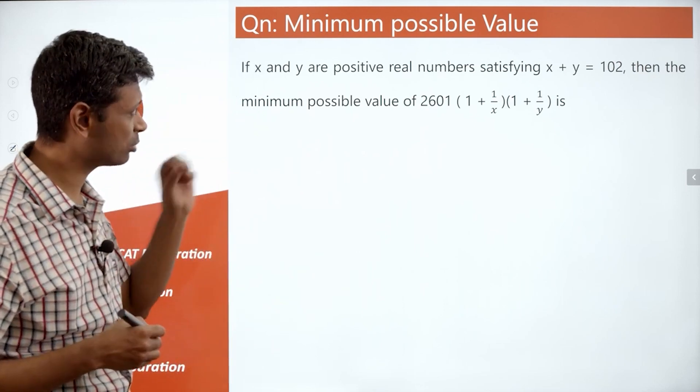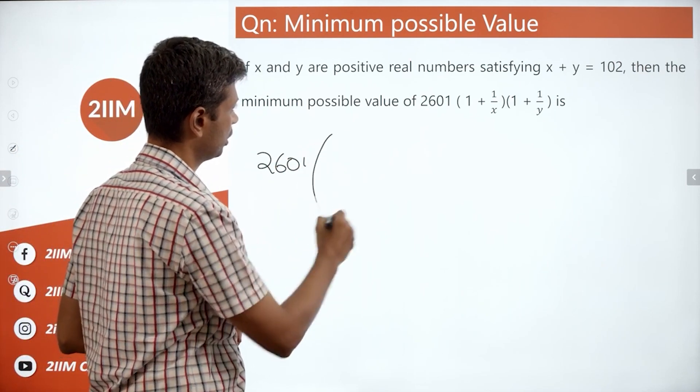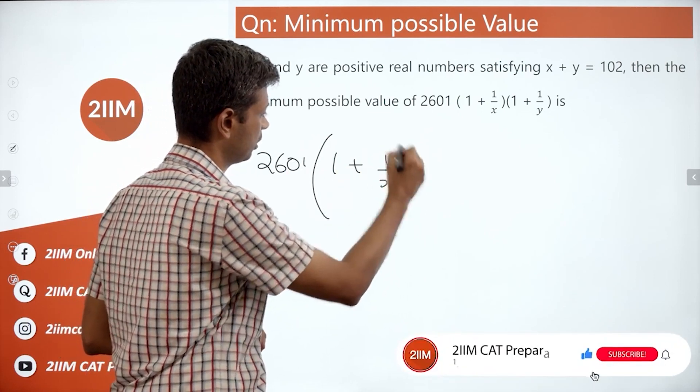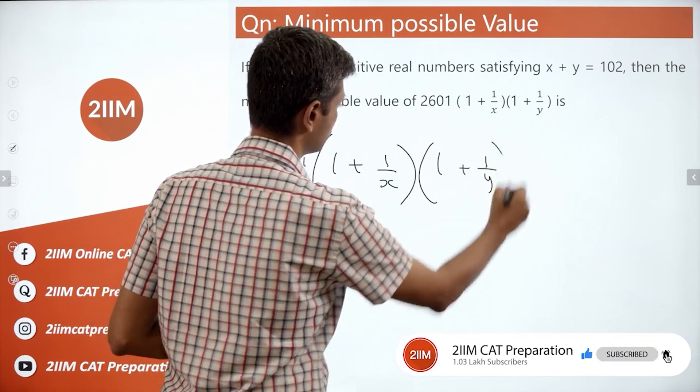Then the minimum possible value of 2601 into (1 + 1/x) into (1 + 1/y).